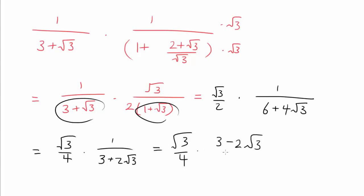Which is (3 minus 2 times square root of 3) over (9 minus 12), which is negative 3. Getting us (3 times square root of 3 minus 6) over minus 12.